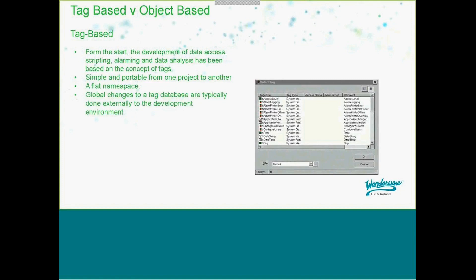Global changes to a tag database are typically done externally to the development environment — using external tools like a text file editor or Microsoft Excel, and then importing that back into your application. Reuse in a tag-based system is commonly set up through dynamic or client-server referencing. The system creates a common graphic containing scripts that switch the tags at runtime. Because the application structure is flat, the user needs to change each tag in the system and analyze how that change affects the rest of the application.